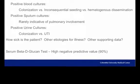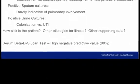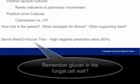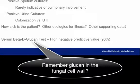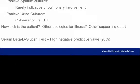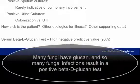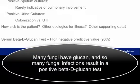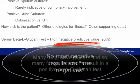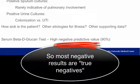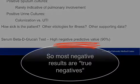Other considerations when interpreting positive cultures include how sick the patient is, whether there are other possible etiologies, and how much supporting data exists for a candidiasis diagnosis. The serum beta-D glucan test is commonly used to aid diagnosis, but its reliability is not firmly established. Positive tests are not specific for Candida, as many fungi have glucan in their cell wall; however, the negative predictive value does have utility.